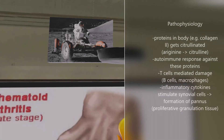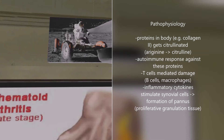Certain proteins in the body, such as collagen type 2, have their arginine amino acids converted to citrulline. This changes how they look and the body no longer recognizes them as self, setting off an autoimmune inflammatory process. T cells stimulate B cells to produce antibodies against these proteins. T cells also secrete cytokines which recruit macrophages, and the macrophages secrete inflammatory cytokines such as TNF-alpha and IL-1.